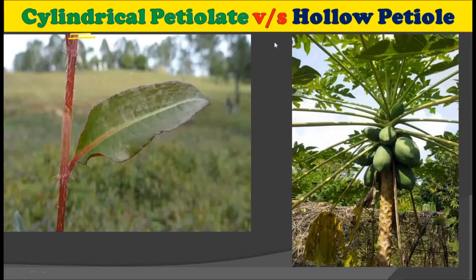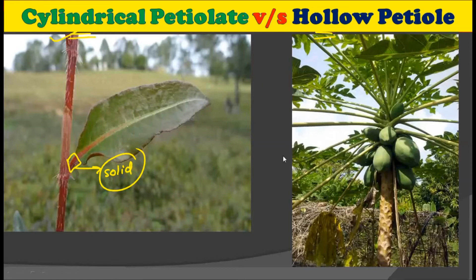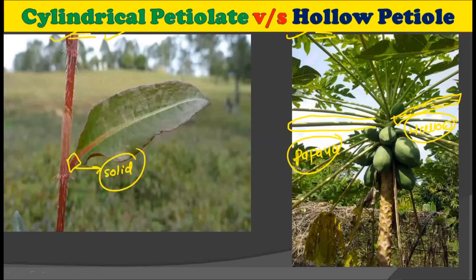The petiole may be cylindrical or hollow — that is, it may be solid from inside or hollow from inside. In the majority of cases, the petiole is solid and is called a cylindrical petiole. While in certain cases, such as in papaya, the petiole is very large and hollow — not filled internally with any material. That is why there are two kinds of petiole: cylindrical and hollow. The example for hollow petiole is papaya.